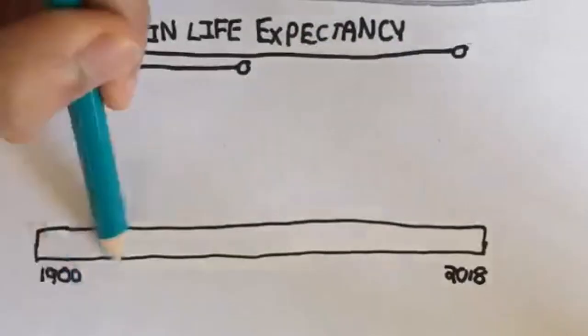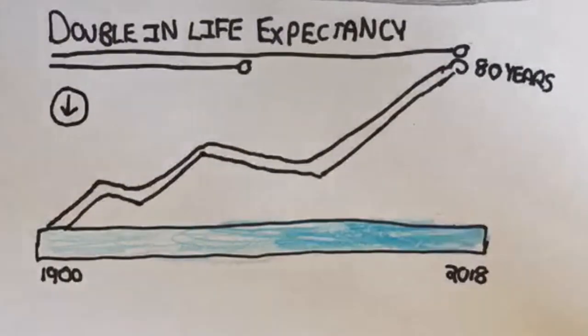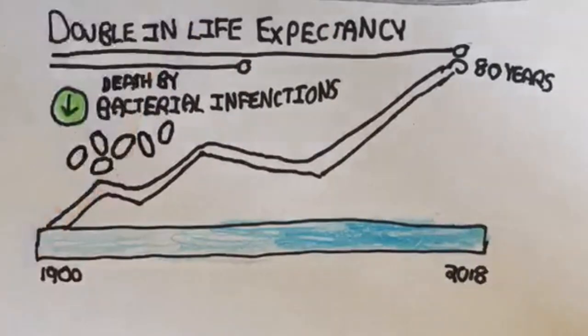Over the past century, the average life expectancy in the U.S. has nearly doubled. Some of these advancements have largely been in the medical field, drastically reducing death by bacterial or viral infections.